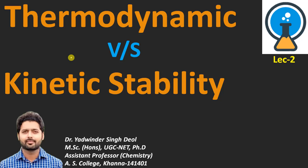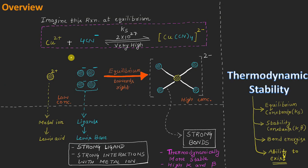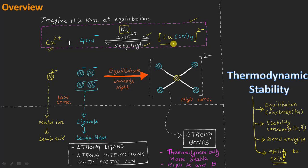Let's see what difference there is in the thermodynamic and the kinetic stability of metal complexes. Imagine this reaction here at equilibrium, in which the copper ions represented by yellow spheres are reacting with four cyanide negative ions, represented by blue spheres. On the equilibrium arrow, the value of the equilibrium constant is 2 × 10²⁷, resulting in the formation of this tetra-cyano-copper complex.